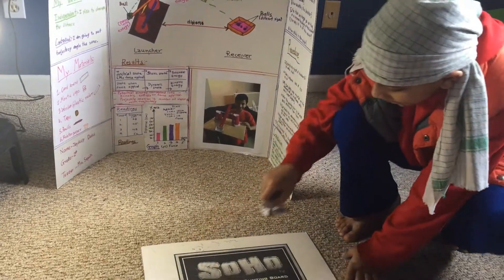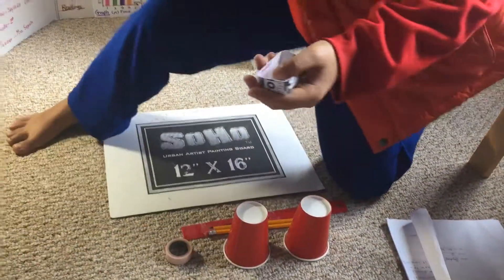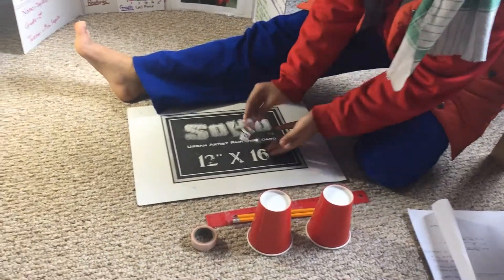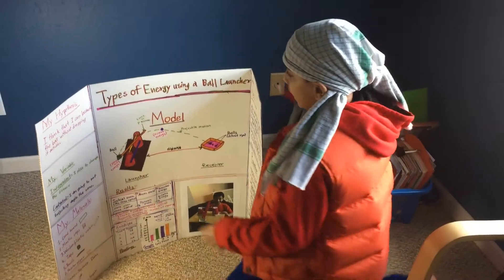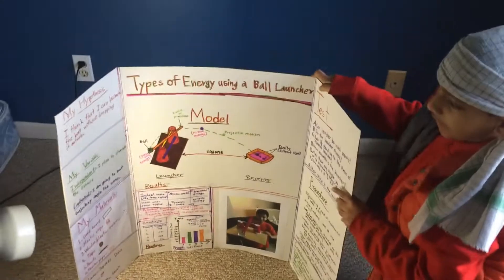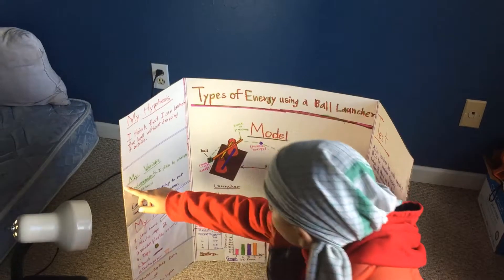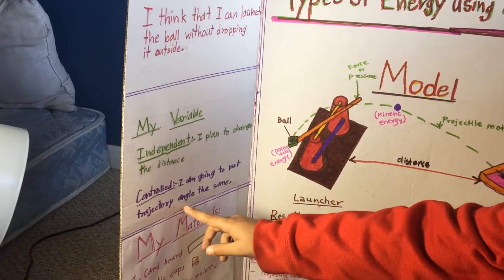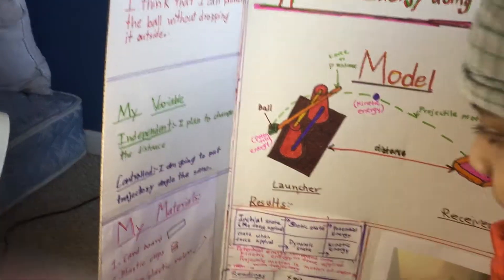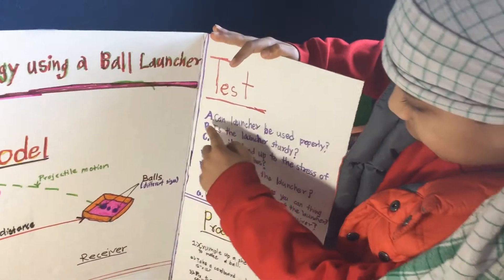We also have aluminum balls in three different sizes, and this catapult launcher. My hypothesis is that I think I can launch the ball without dropping it outside. My variables are: independent — I plan to change the distance; controlled — I'm going to keep the track at a 10-degree angle the same.